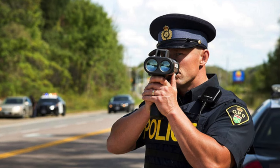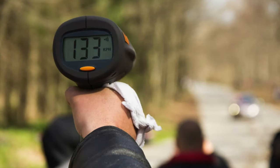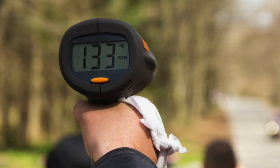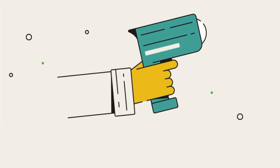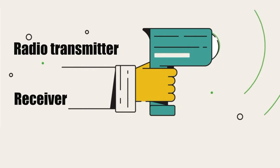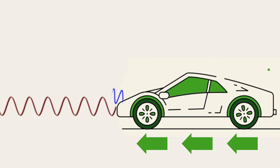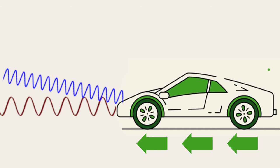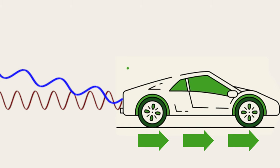A police radar gun is another example of the Doppler effect. A radar gun is a device used by law enforcement officers to keep a check on over-speeding vehicles. A radar gun is made up of a radio transmitter and a receiver. It transmits a radio wave signal and receives the same signal back after it bounces off the target object. When the object is approaching the radar, the frequency of the return wave is higher than the transmitted wave; when moving away, the frequency is lower. By analyzing the frequency changes between the transmitted and reflected waves, the radar gun can calculate the speed of the vehicle.